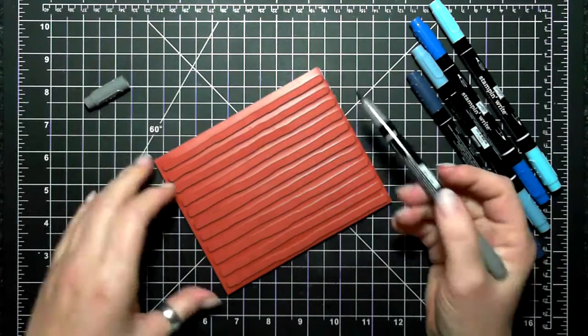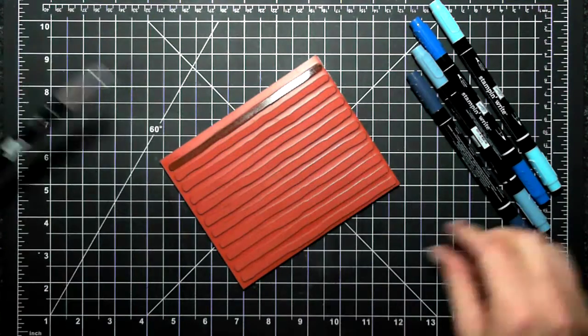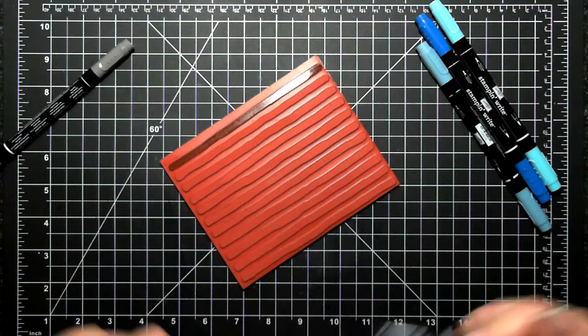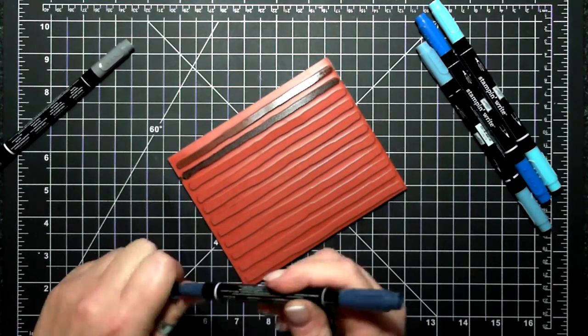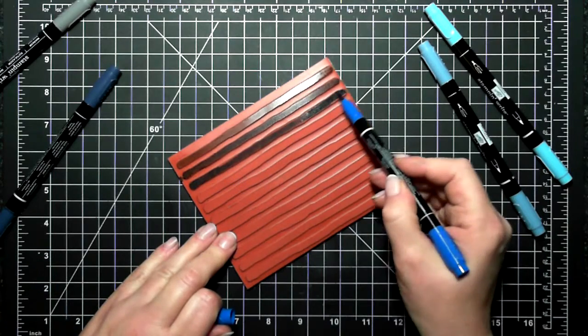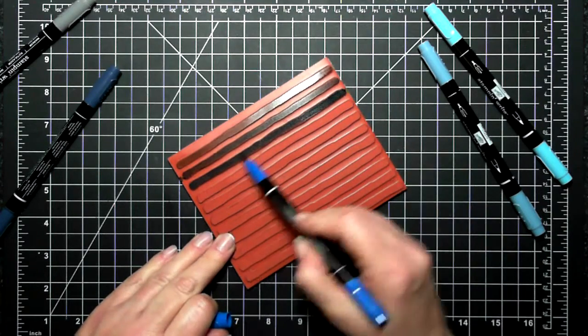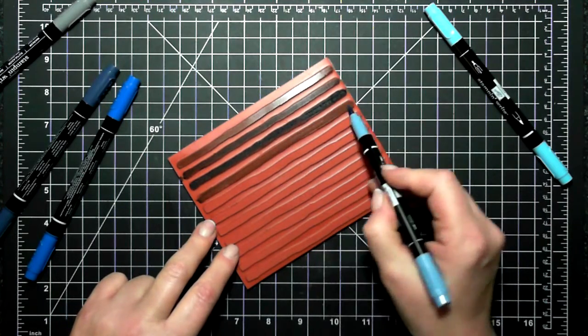Okay, so here are the markers. The markers I'm using are Basic Gray, Pacific Point, Marina Mist, Night of Navy, and Tempting Turquoise. Same technique as before: just coloring the ink onto the stamp and repeating it.